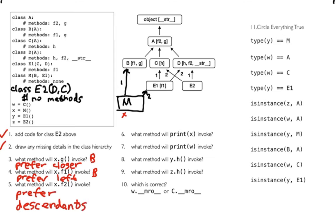When considering these two options, I could just think about which goes left and which goes right, but these two actually have a relationship between them — D is a descendant of A. By descendant I mean it could be a child, grandchild, or great-great-grandchild. This is the strongest rule of all: prefer descendants. So even though preferring left might take us to A, this stronger rule takes me to D. Those are the three rules — they capture the C3 algorithm.